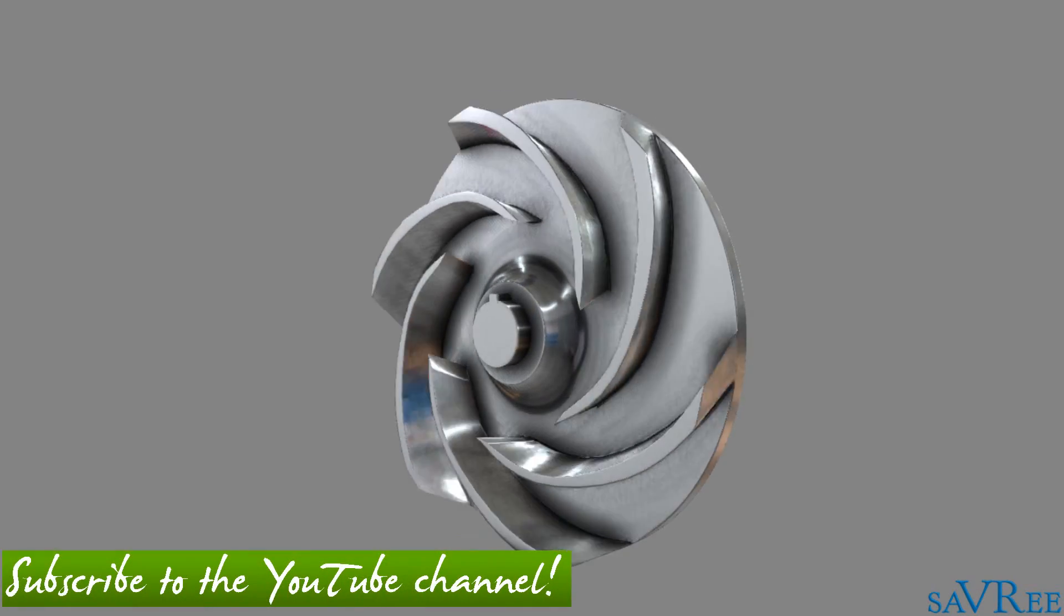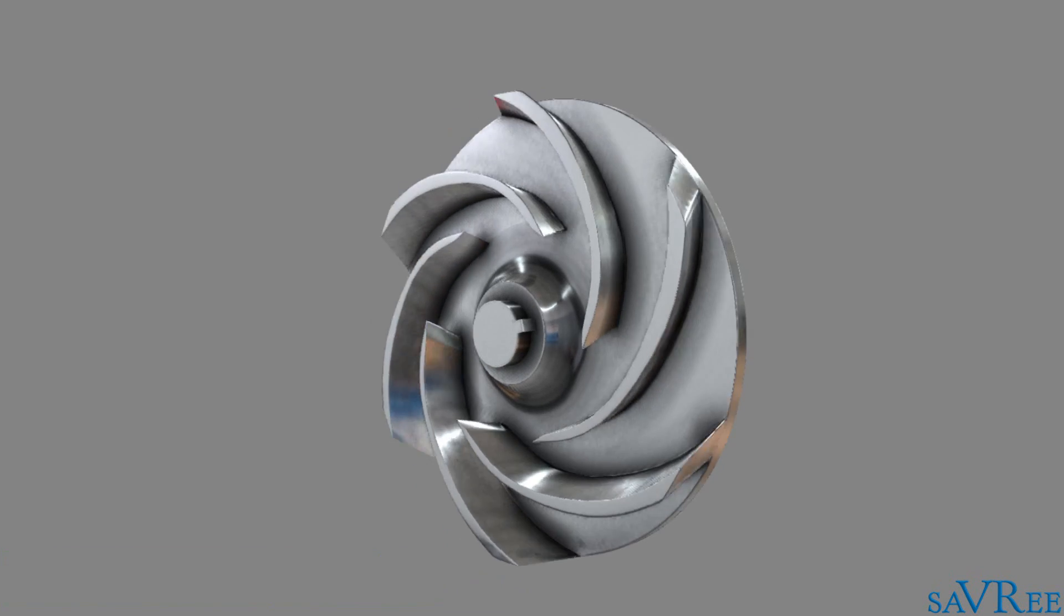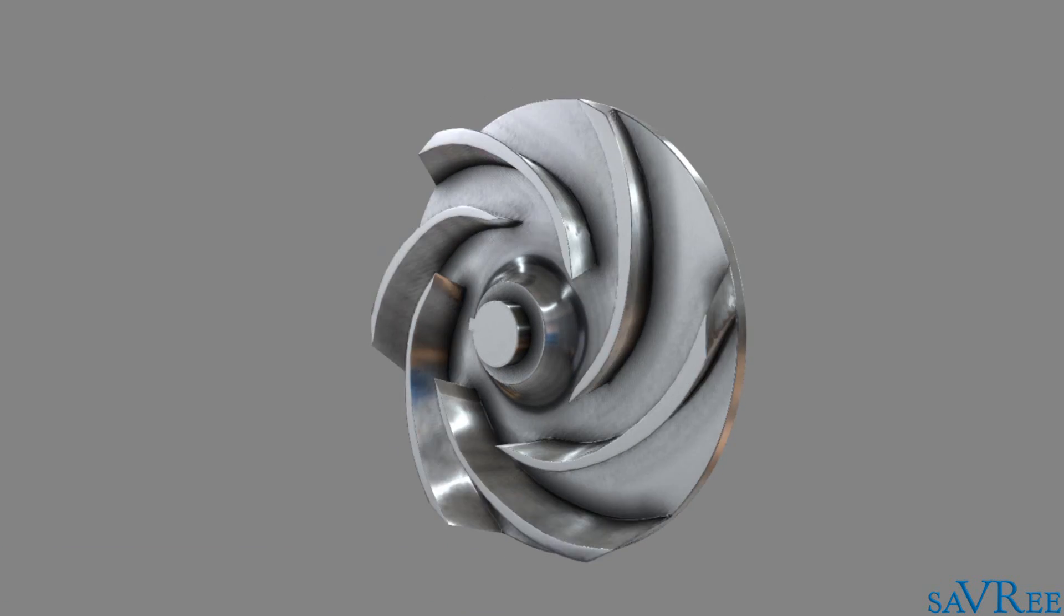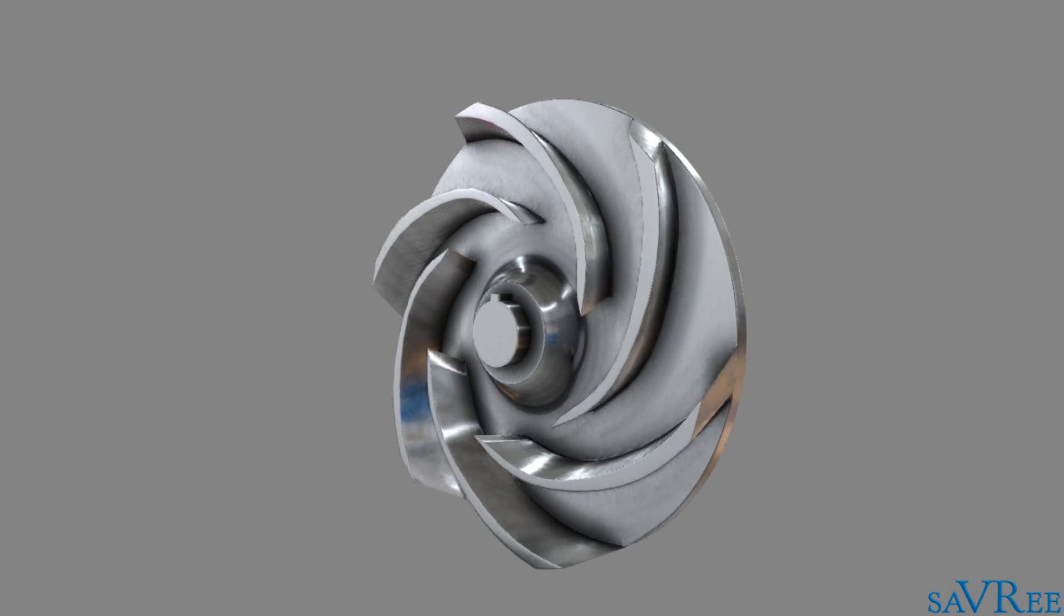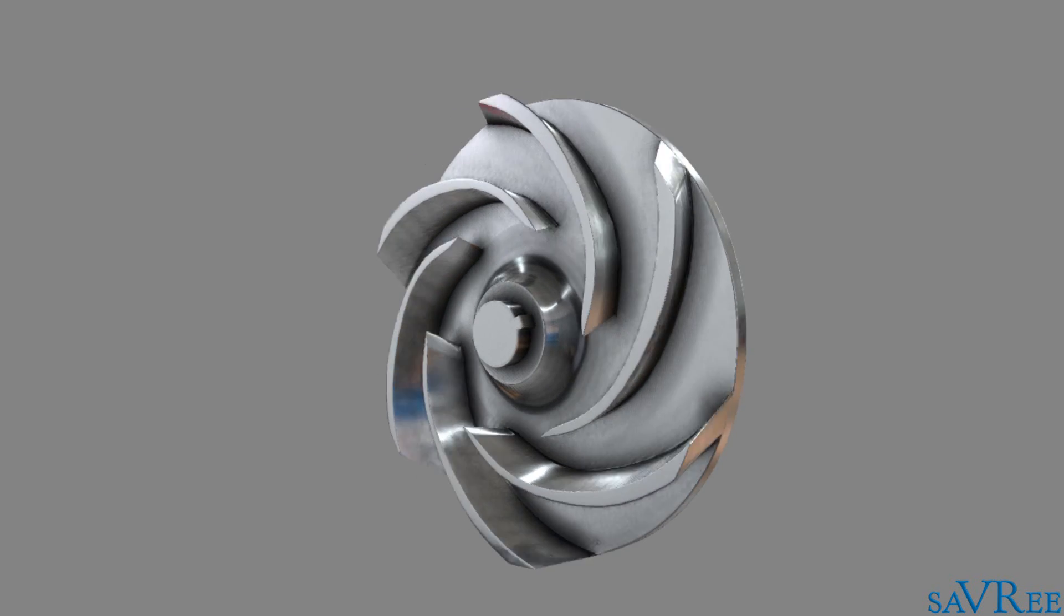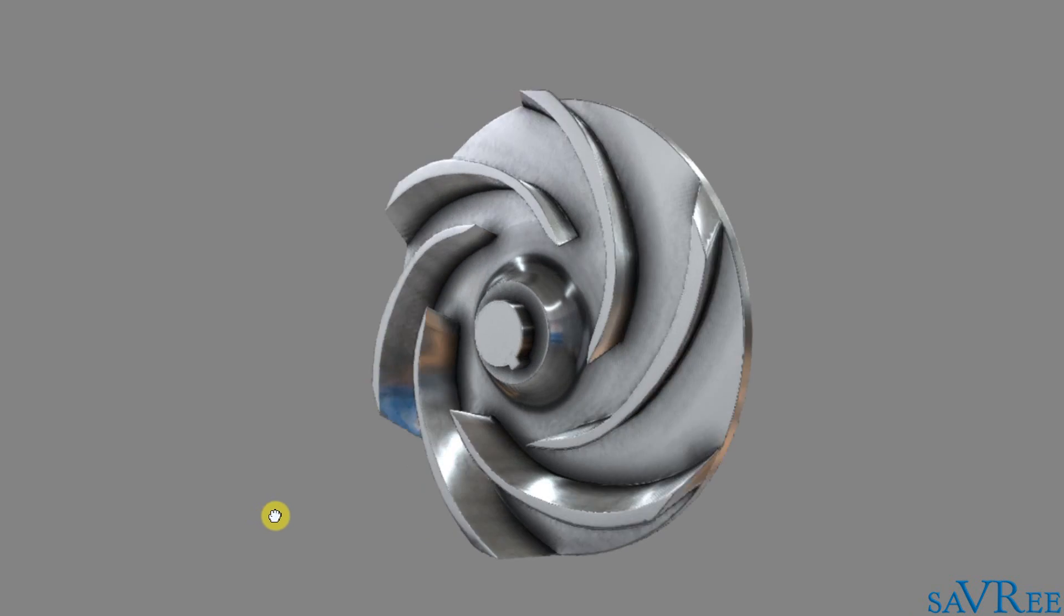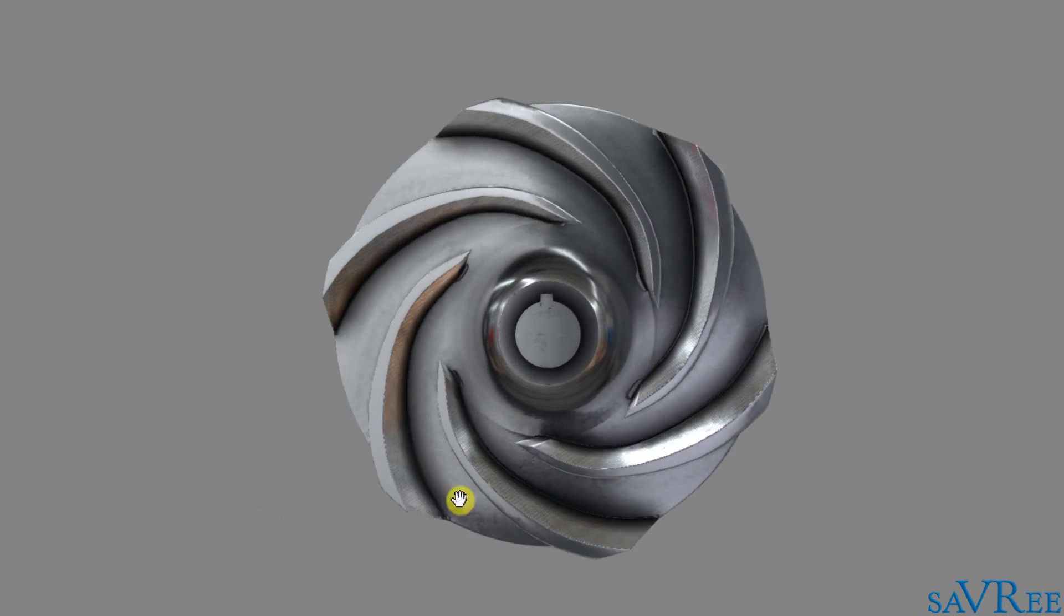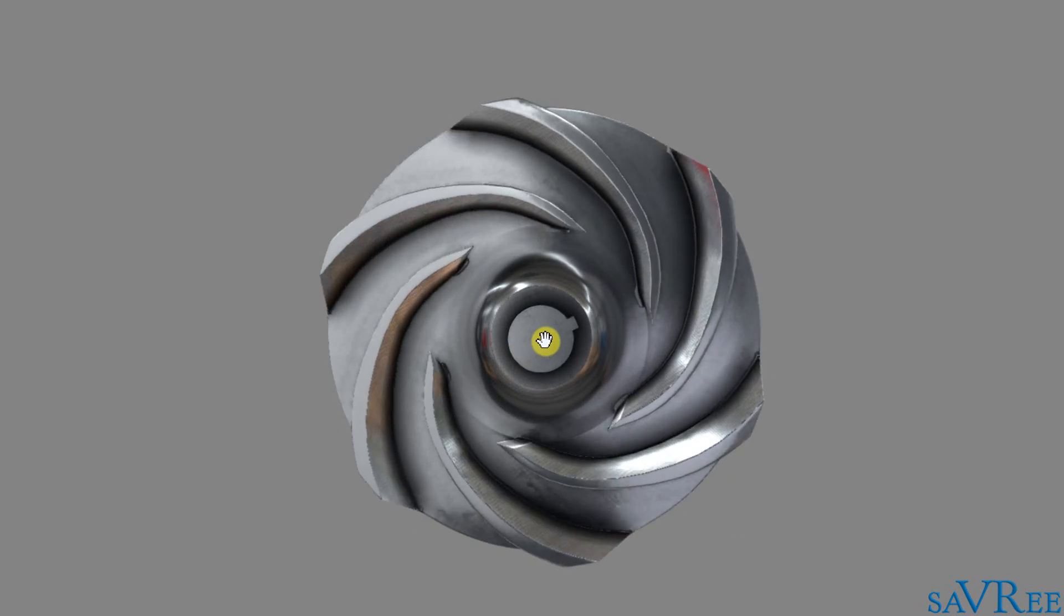So here we are. We're now looking at a centrifugal semi-open type impeller. The type we saw earlier was the enclosed type, and this one is a semi-open type or the semi-closed, depending on how you want to look at it. As you can see, it is rotating in a clockwise direction. I'll give it a little spin. And we can see also that there's a shaft in the middle of the impeller and a shaft key, which connects the shaft to the impeller itself.